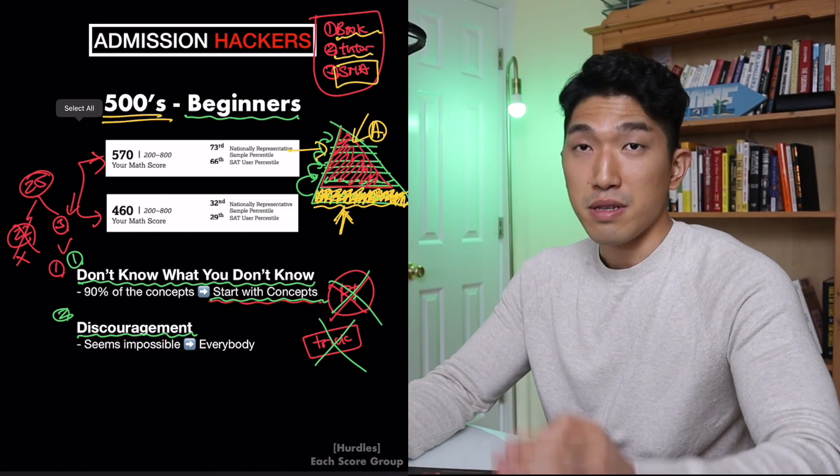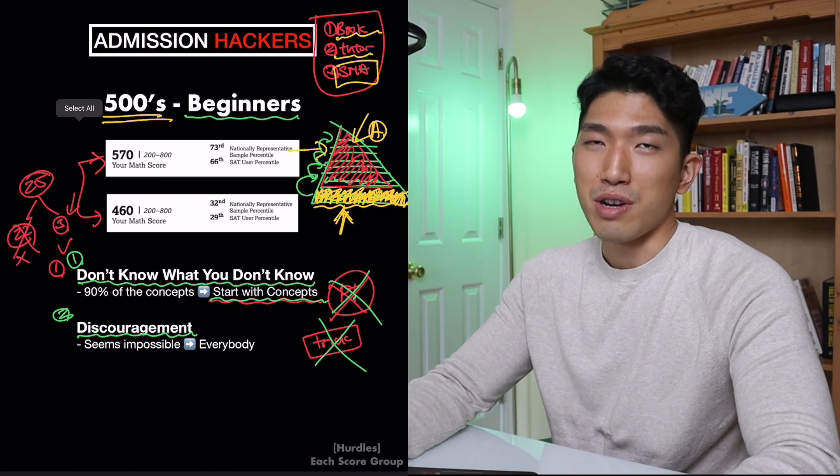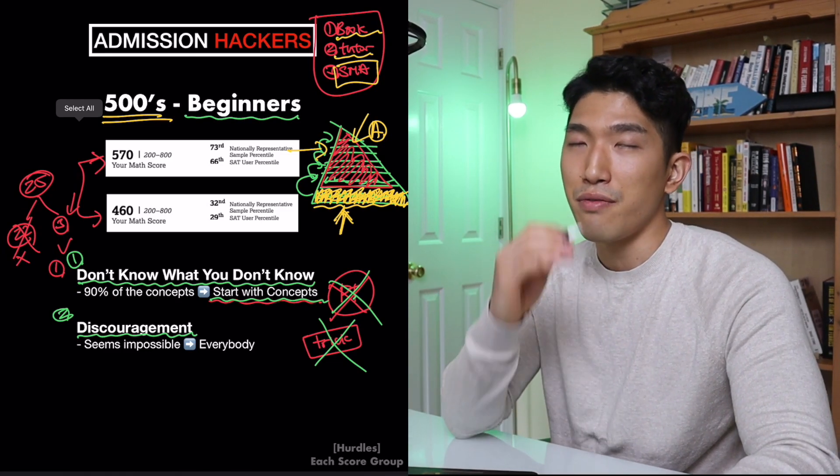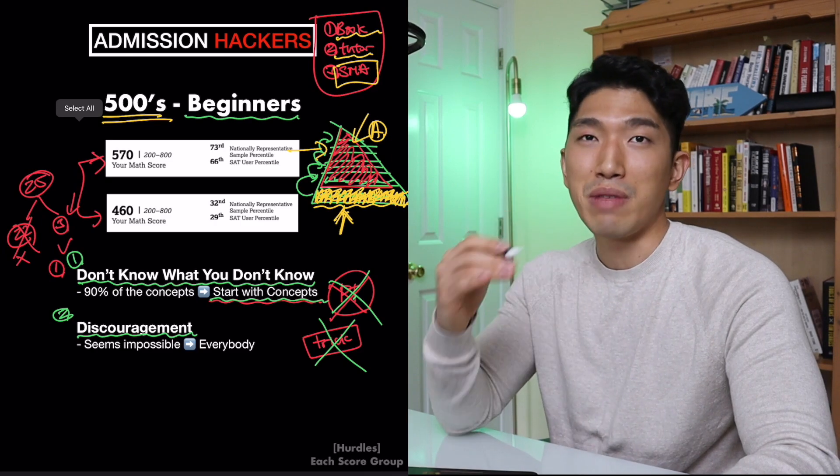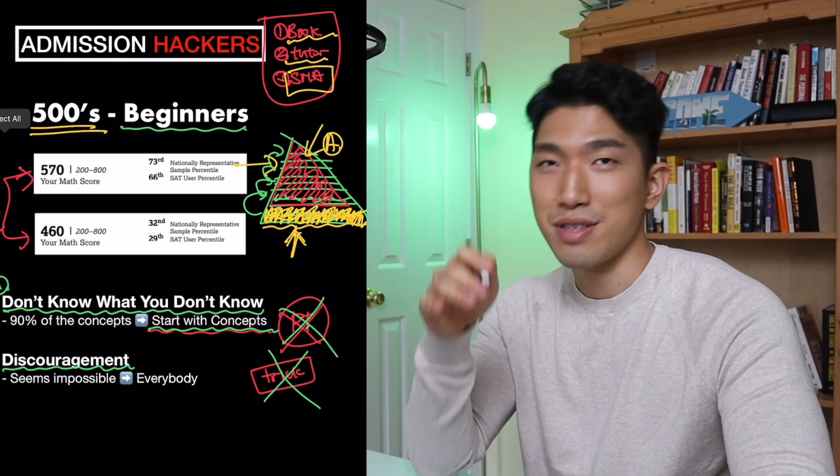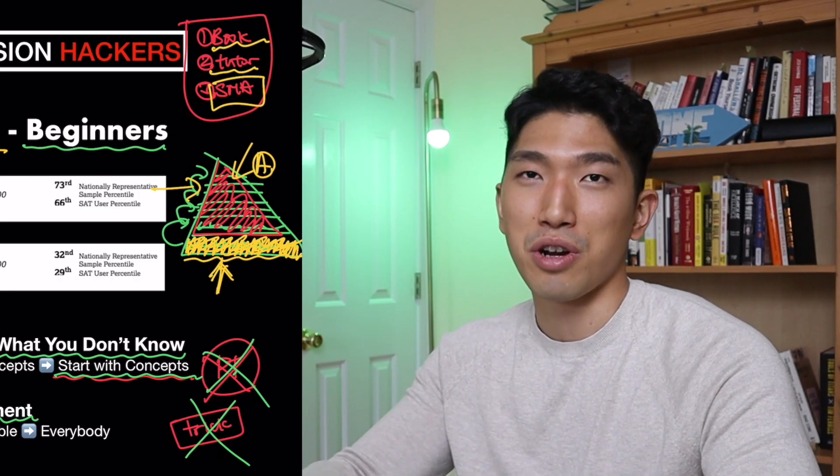See, we all got to start somewhere. See, some people start in the 500s. Some people start in the 600s. And very, very, very few people start with 750 plus. And if you are that person, stop taking the SAT because you are destroying the curve.